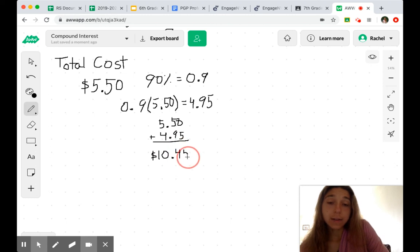The other way you could do this is by recognizing that if it's going to be marked up by 90%, you are paying 1.9 times the original amount. You're paying the whole thing, that's the one, and then the 90%. And if we multiply 1.9 by $5.50, we get that same $10.45.